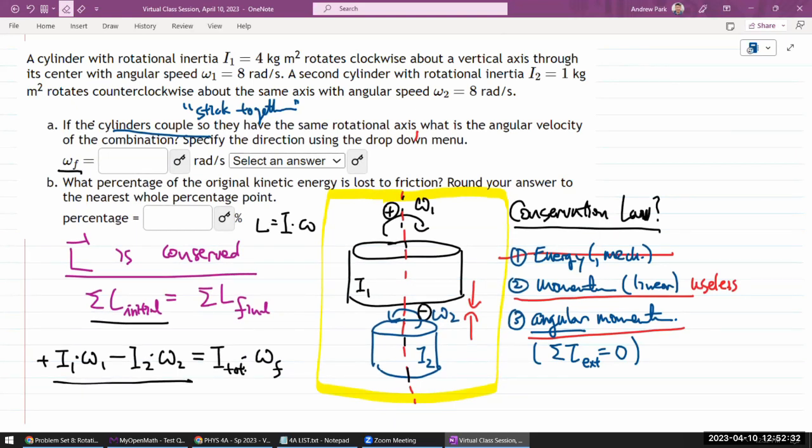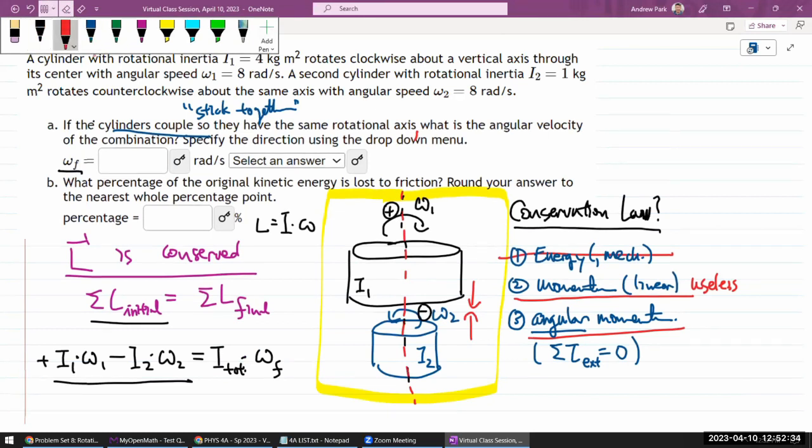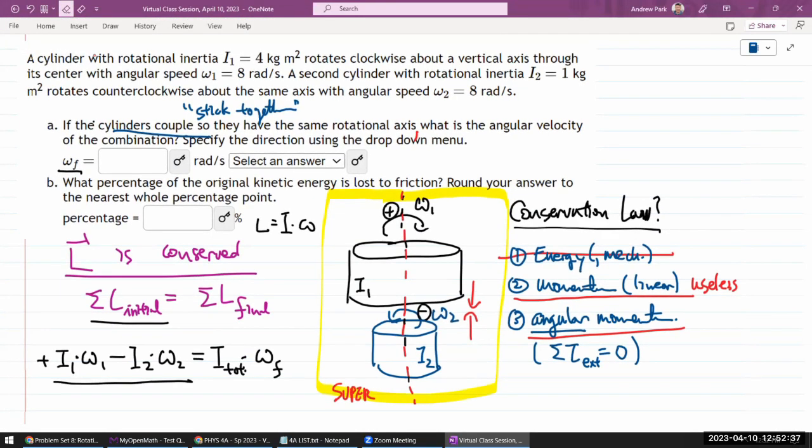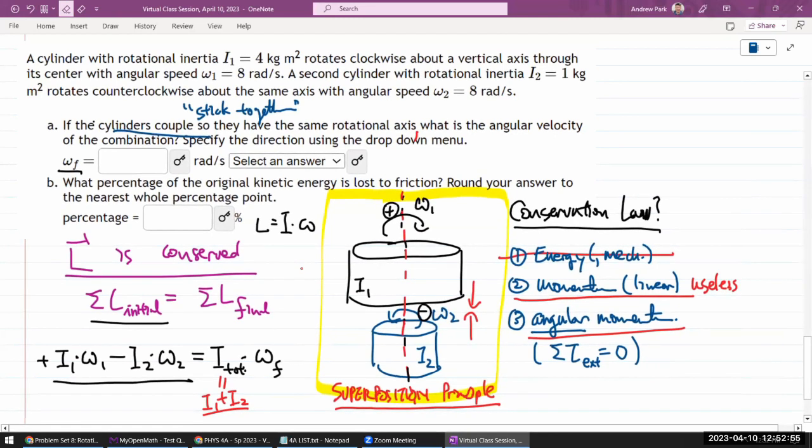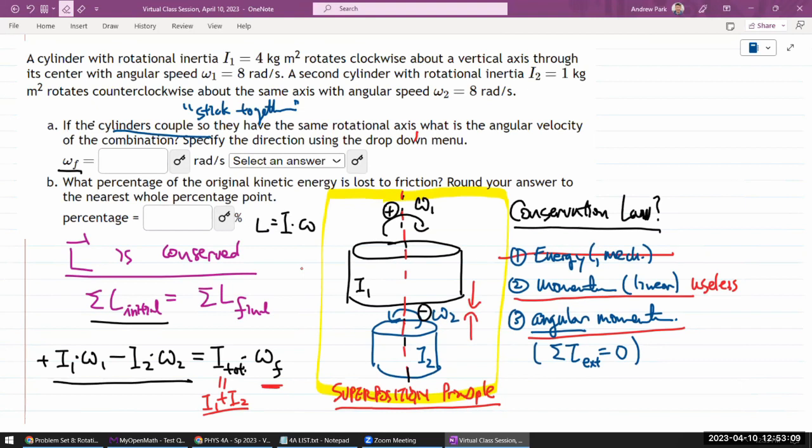And this is where your awareness of the superposition principle will help. If you have a good sense of the superposition principle, then you can kind of guess or get that this total rotational inertia is simply I1 plus I2. They're sticking together, they're adding together like masses added together in totally inelastic collision. So with the total rotational inertia being basically known, the only unknown is your final angular velocity. So we can solve for that.